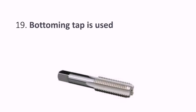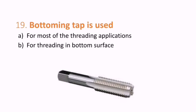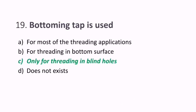Nineteenth question: a bottoming tap is used for what? Options are most threading applications, threading in bottom surface, threading only in blind holes, or does not exist. The correct answer is bottoming tap is used only for threading in blind holes.